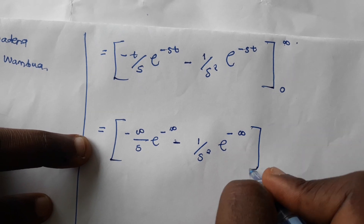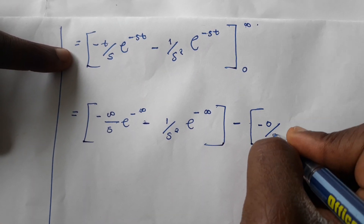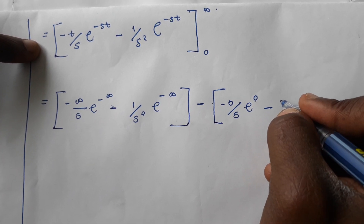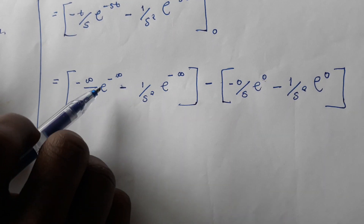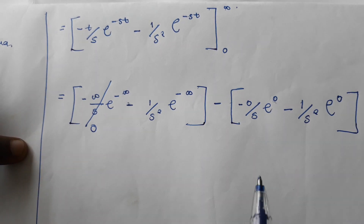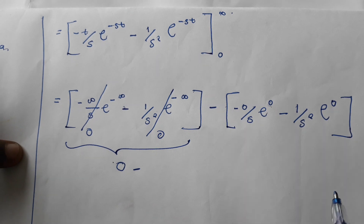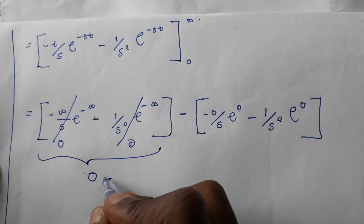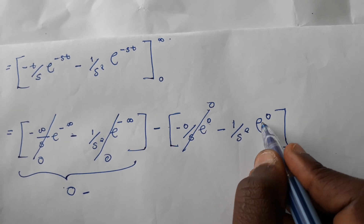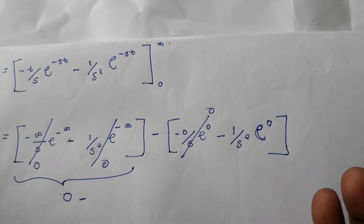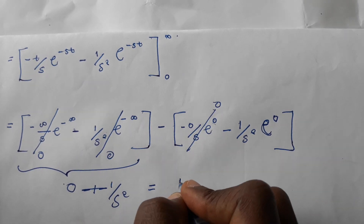Since e^(−∞) = 0, both upper-limit terms yield zero. For the lower limit: 0 multiplied by any number is 0, so the first term vanishes. Since e^0 = 1, we are left with minus of minus 1 over s², which gives us positive 1 over s². And we do not forget that we had a constant a outside the integral from when we integrated by parts.